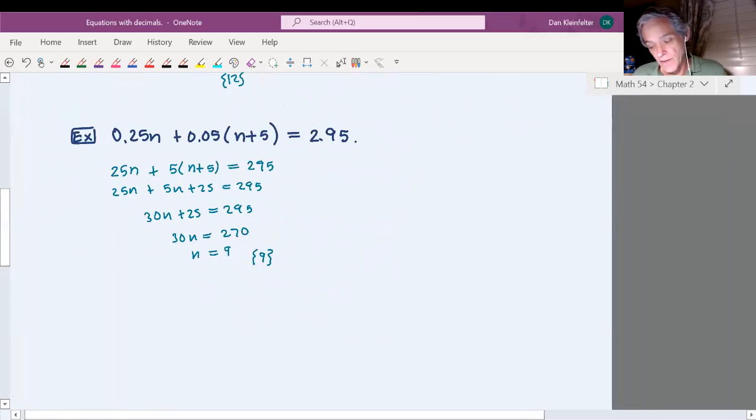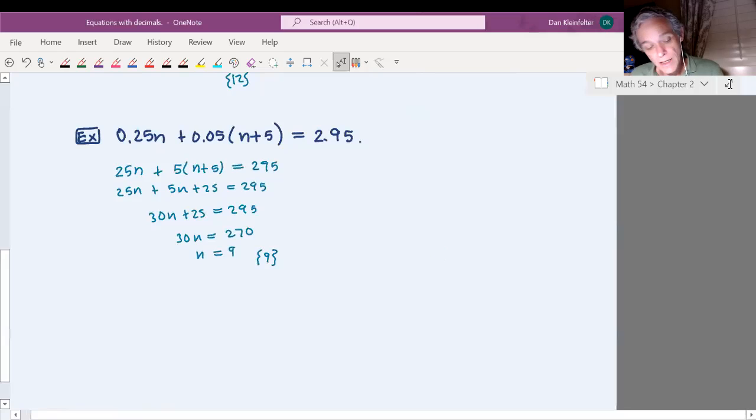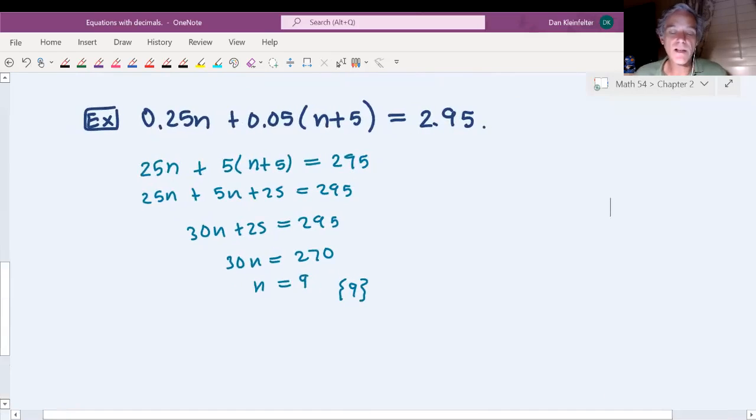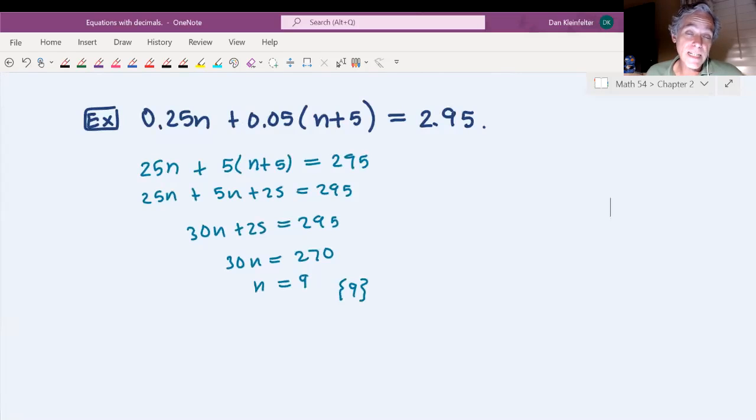So that takes us to the end of this section on working with decimals and fractions. We saw that essentially we multiply both sides by the LCM of the denominators when it's fractions. And we move the decimal point over by a number of decimal places equal to maximum number of digits behind the decimal point in the coefficients in the case with the equation as decimals in it.